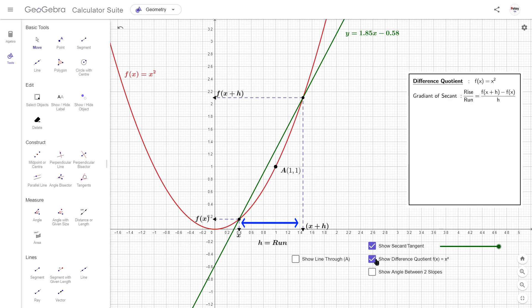The run is this distance h at the bottom between points x and x plus h, whereas the rise is this distance between the points f of x and f of x plus h, which means we can rewrite rise over run as so.